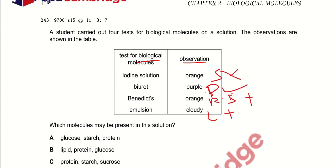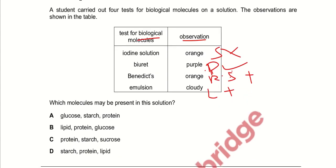So, which molecules may be present in this solution? This solution can contain lipids because the emulsion test gives a positive result. Proteins can also be present because the biuret test gives a positive result. And glucose is also present in a low amount because the Benedict's solution is giving orange color. So, option B is the right answer.